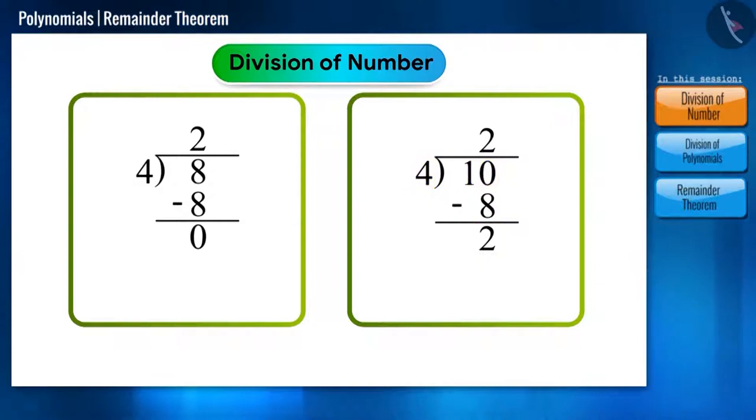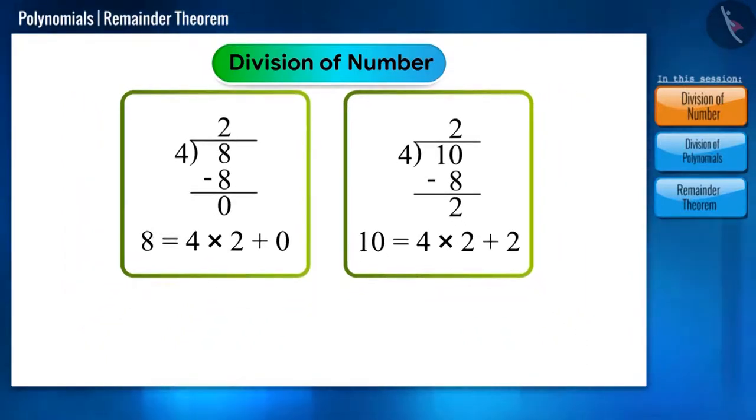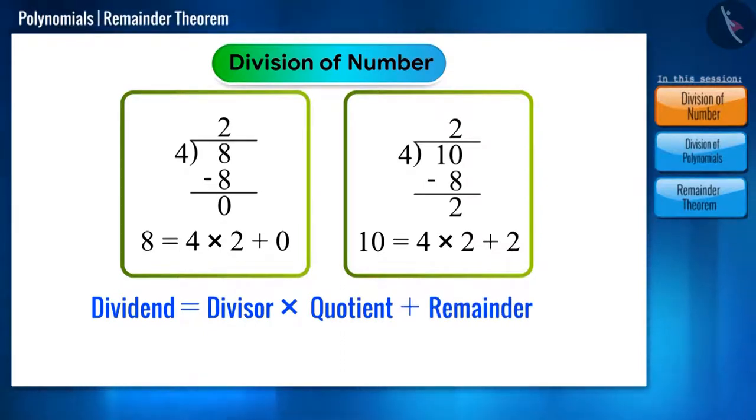We can also represent this process as 8 equals 4 multiplied by 2 plus 0, and 10 equals 4 multiplied by 2 plus 2. We can say dividend equals divisor multiplied by quotient plus remainder.